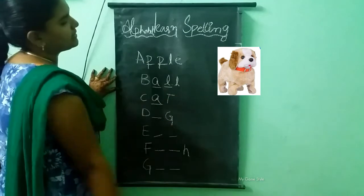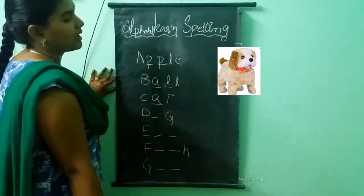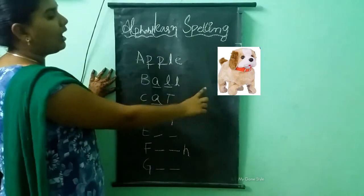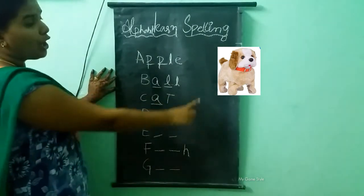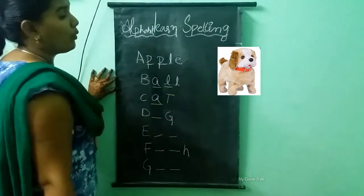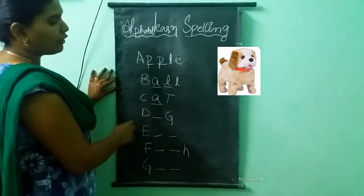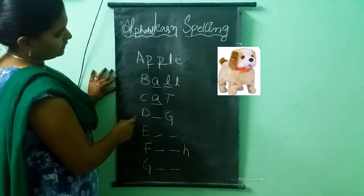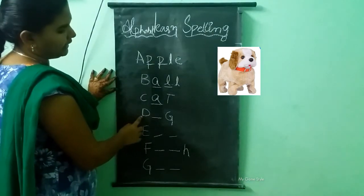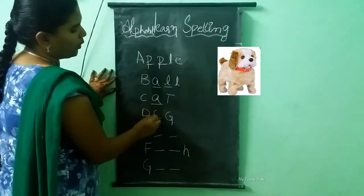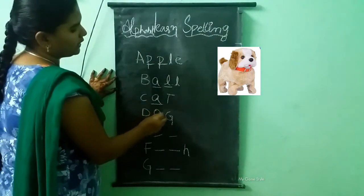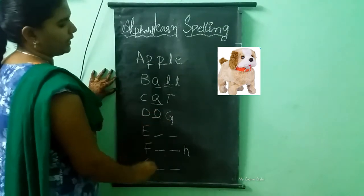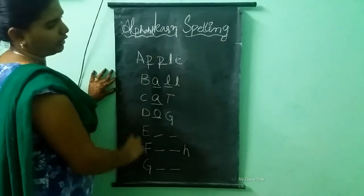What picture is this? This is a dog. What is the spelling of dog? D-O-G. Dog.